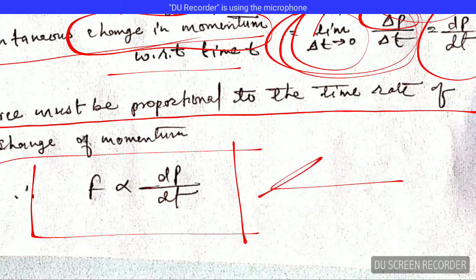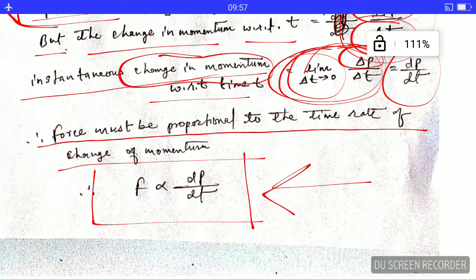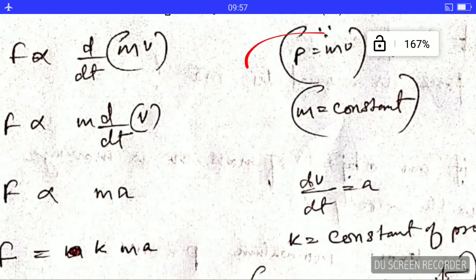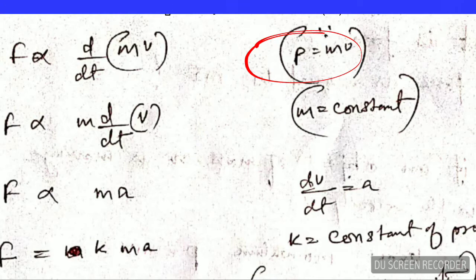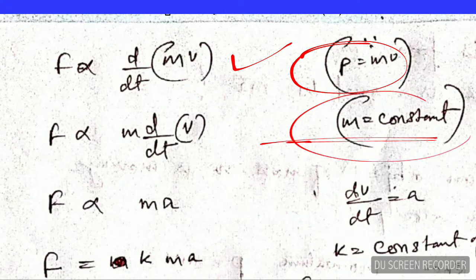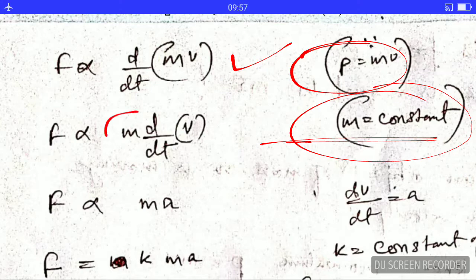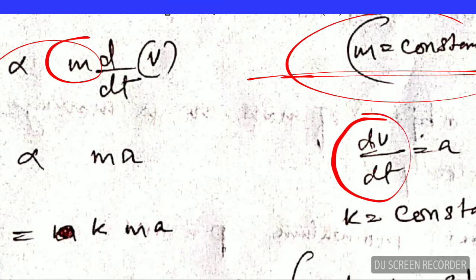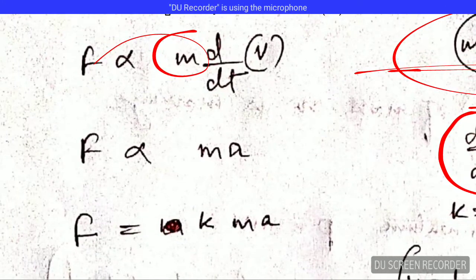This is Newton's second law. Now, substituting the value of momentum P as mV, and assuming a non-relativistic case where mass is constant, mass comes out of the differential.